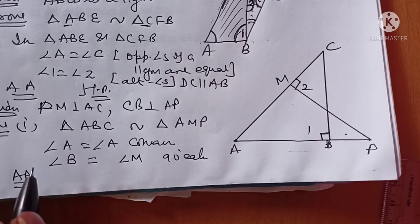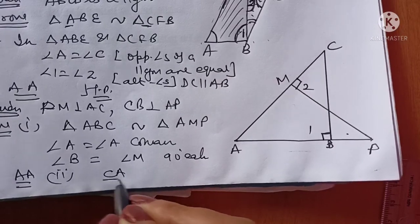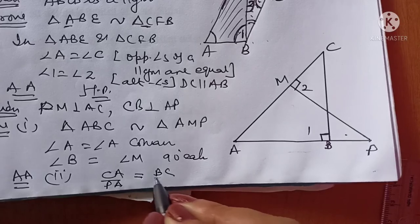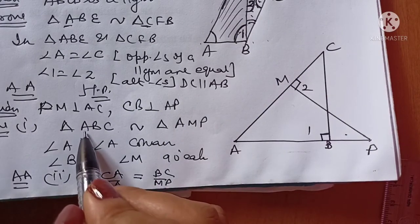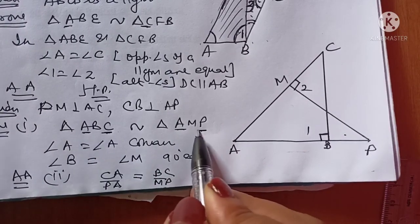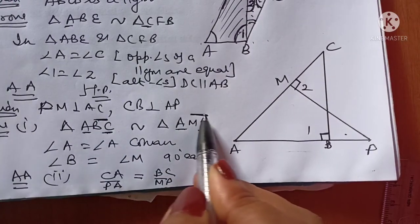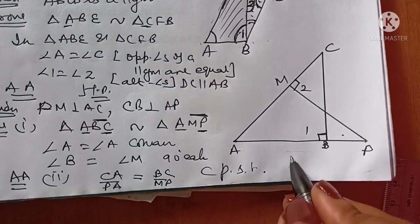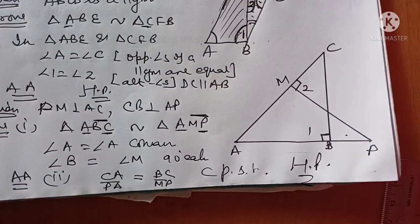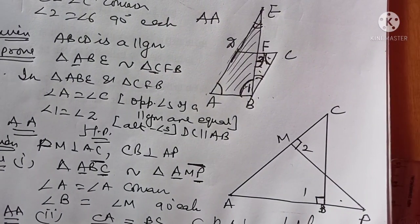For the second part, we have to prove CA upon PA is equal to BC upon MP. Since triangle ABC is similar to triangle AMP, taking the corner alphabets gives CA over PA, and taking the next two alphabets gives BC over MP. So this ratio follows directly by CPST — corresponding parts of similar triangles. That's it, hence proved. I hope you understand the video. We have covered four questions. Keep practicing, thank you.